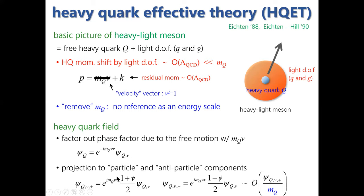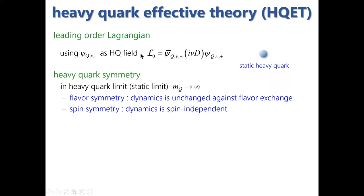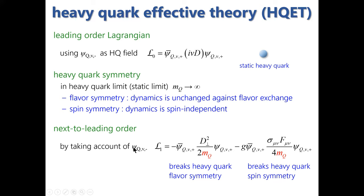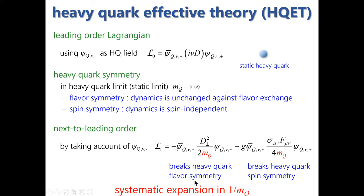HQET has no reference to the heavy quark mass as an energy scale. We remove the dominant m_Q dependence from the heavy quark field by factoring out the phase due to the free motion of the heavy quark, and project onto particle and antiparticle components using a projector. When the heavy quark mass is large, the particle component gives the dominant contribution and the antiparticle component is suppressed by 1/m_Q. Using the dominant particle component as the heavy quark field, we obtain the leading-order HQET Lagrangian, where heavy quark flavor symmetry and heavy quark spin symmetry are manifest. Taking into account the subleading antiparticle component gives the next-to-leading-order Lagrangian, which includes a kinetic term that breaks heavy quark flavor symmetry and a magnetic moment interaction that breaks heavy quark spin symmetry, giving an automatic 1/m_Q expansion.